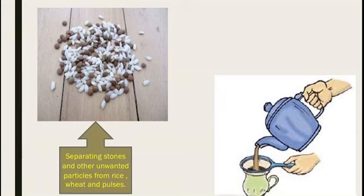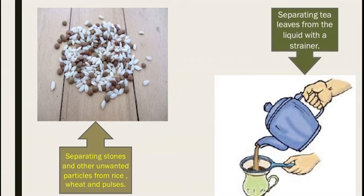The second example is when we make tea, we separate the tea leaves from the liquid with a strainer. Why is it so? Because we cannot eat the tea leaves. We cannot take them as it is a waste particle. It gives only the flavor but we shouldn't eat it. This is another reason for separation: removal of undesirable components.